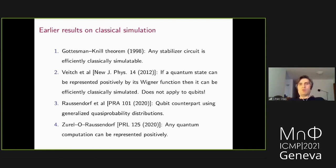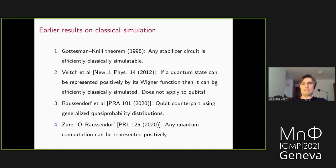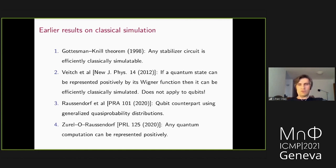Stabilizer theory is based on the Pauli group — a finite subgroup of unitaries on n-qubit space C₂^⊗n generated by tensor products of Pauli matrices I, X, Y, Z. The normalizer of the Pauli group is the Clifford group, generated for qubits by the Hadamard gate, the S gate, and CNOT. Stabilizer states are those obtained from the all-zeros computational basis state by applying Clifford unitaries — a finite set of states.